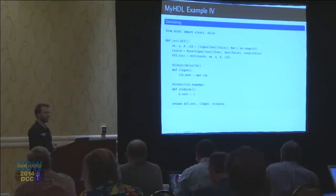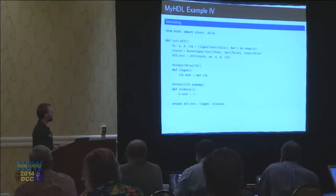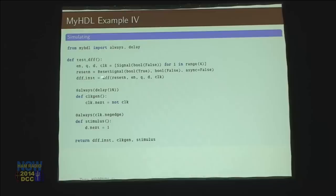We can run a simulation of this. When I simulate it, I do the same thing: I create the signals, I create the reset signal, and then I actually instantiate the D flip-flop with those four signals. Then I have two other things — I added in the clock.